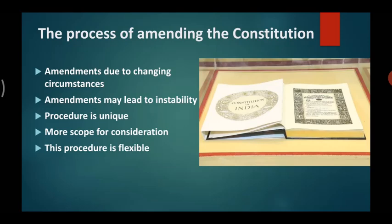The procedure for amendment or change is specified in the constitution itself. The procedure for amendment is unique — it is neither too difficult nor too easy. More scope has been provided for giving consideration and thought to important amendments, and the procedure is also flexible to ensure that general amendments can be brought about easily. In short, the constitution keeps changing whenever conditions require it.